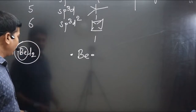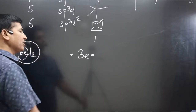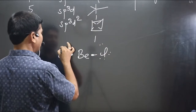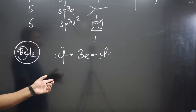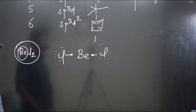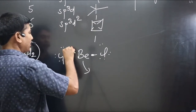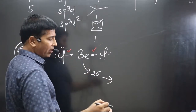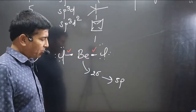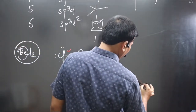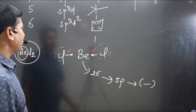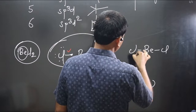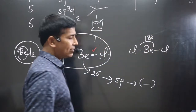Chlorine is a halogen, and halogens always form a single bond. We can show the dots — six electrons shown, and out of seven one electron is used for bond formation. Now we calculate the number of sigma bonds: this is the first sigma bond and this is the second — two sigma bonds. For two sigma bonds hybridization will be sp, and the shape we get is linear, with a bond angle of 180 degrees.